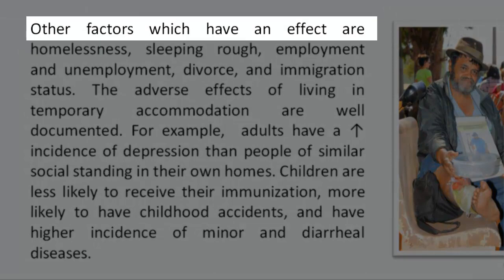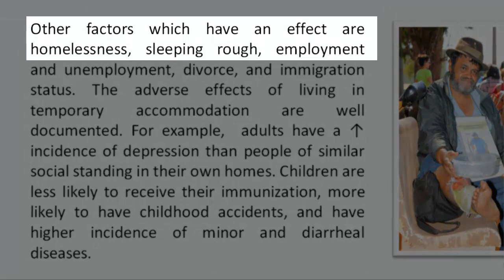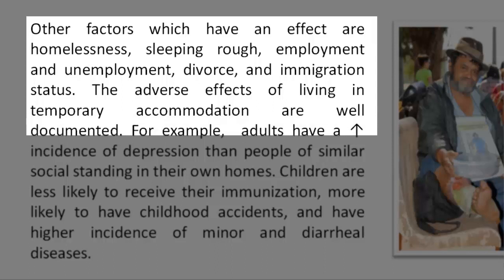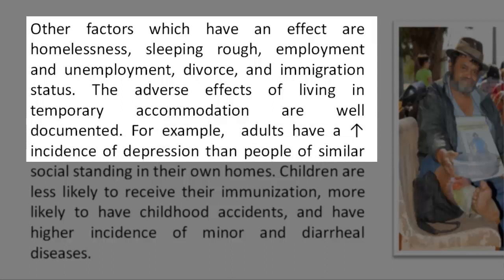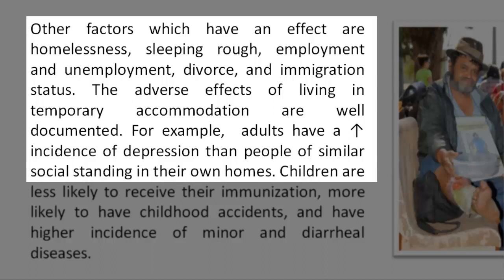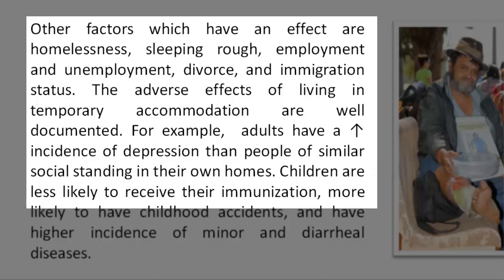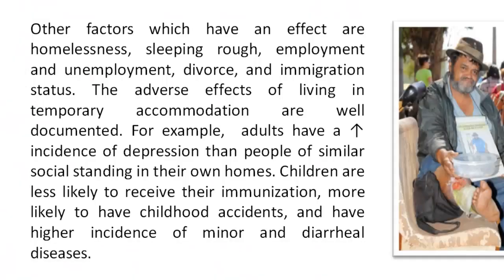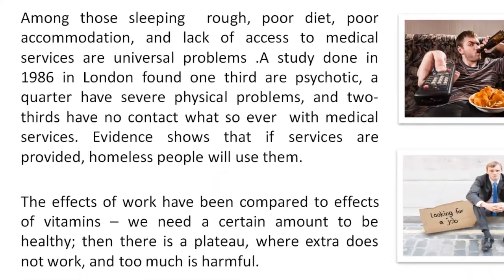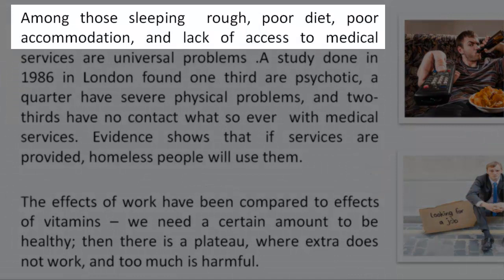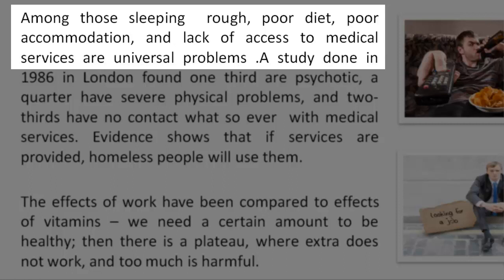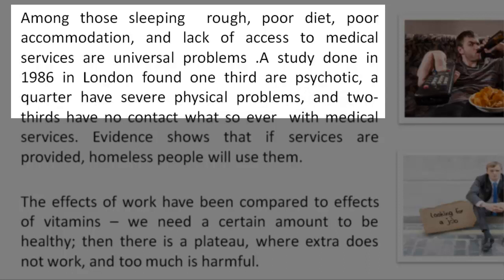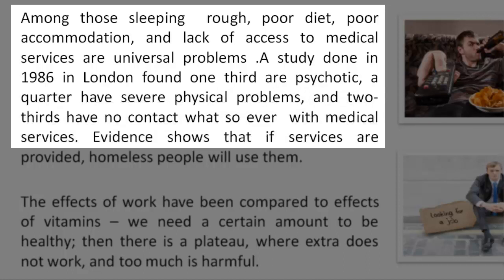Readings 4 to 5. Other factors which have an effect are homelessness, sleeping rough, employment and unemployment, divorce, and immigration status. The adverse effects of living in temporary accommodation are well documented. For example, adults have a higher incidence of depression than people of similar social standing in their own homes. Children are less likely to receive their immunization, more likely to have childhood accidents, and have a higher incidence of minor and diarrheal diseases. Among those sleeping rough, poor diet, poor accommodation, and lack of access to medical services are universal problems. A study done in 1986 in London found one-third are psychotic, a quarter have severe physical problems, and two-thirds have no contact whatsoever with medical services.